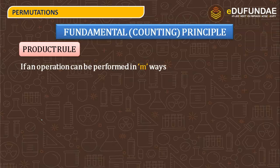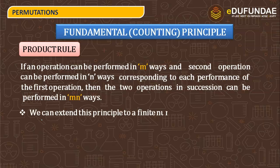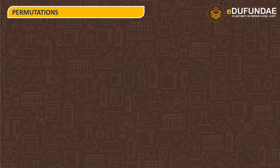Product rule and addition rule. If you look at the product rule: if an operation can be performed in m ways, and a second operation can be performed in n ways corresponding to each performance of the first operation, then the two operations in succession can be performed in m×n ways. We can extend this principle to a finite number of operations.